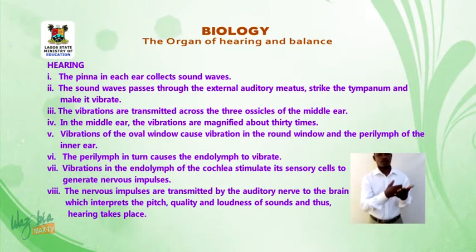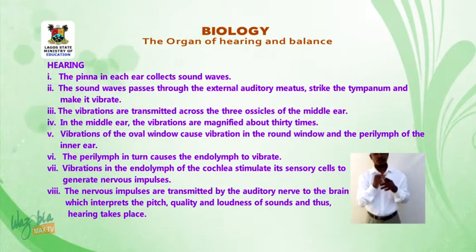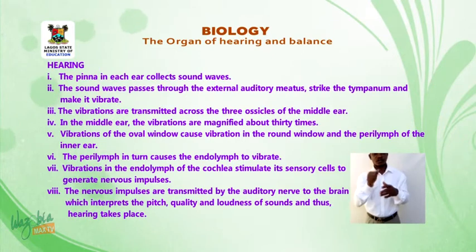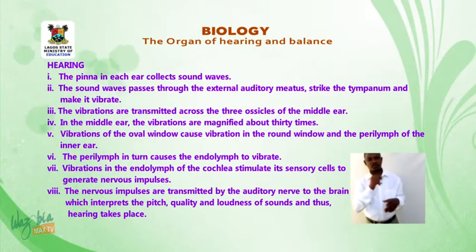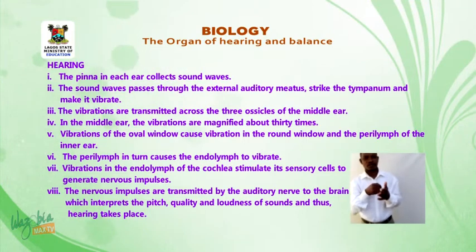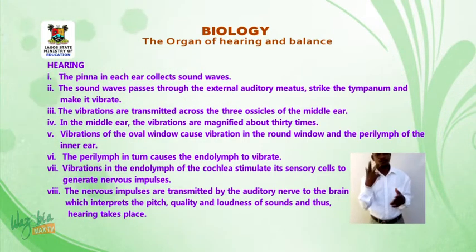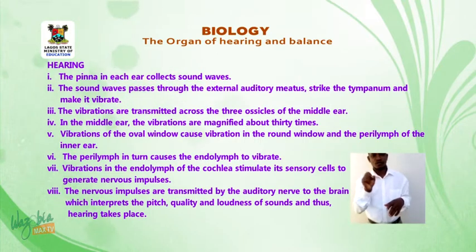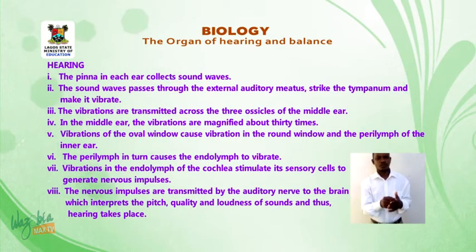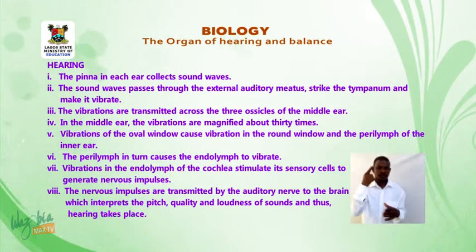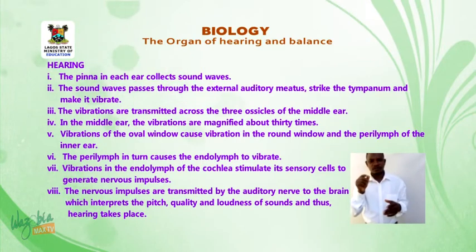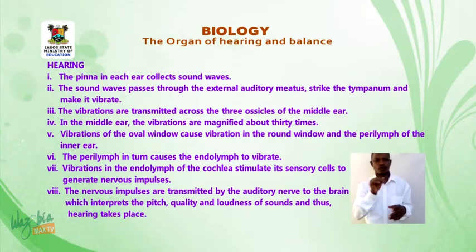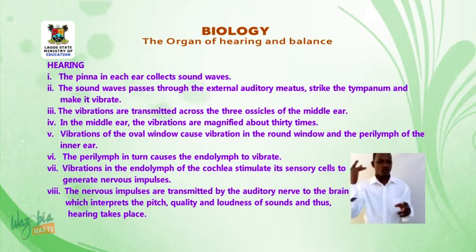Hearing occurs as follows. One, the pinna in each ear collects sound waves. Two, the sound waves pass through the external auditory meatus and strike the tympanum, making it vibrate. Three, the vibrations are transmitted across the three ossicles of the middle ear. Four, in the middle ear, the vibrations are magnified about 30 times.